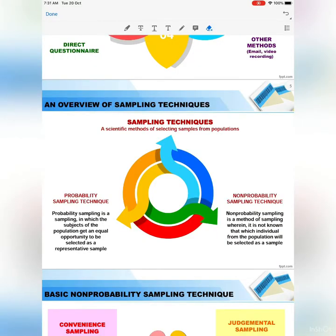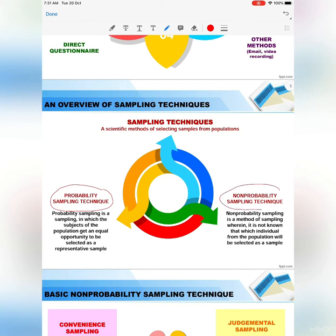Let's look at an overview of sampling techniques. Sampling techniques is a scientific method of selecting a sample from a population. We have 2 different techniques: the first is probability sampling technique and the second is non-probability sampling technique. For probability sampling, subjects of the population get an equal opportunity to be selected as a representative sample. For non-probability, it is not known which individual from the population will be selected as a sample.